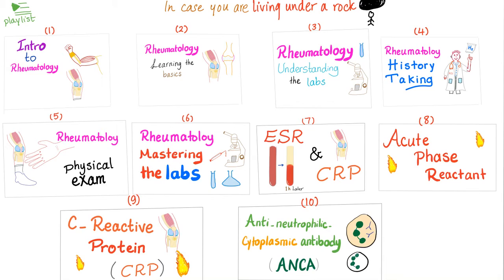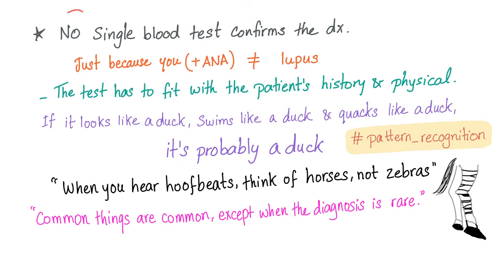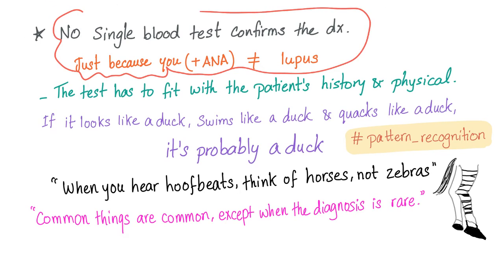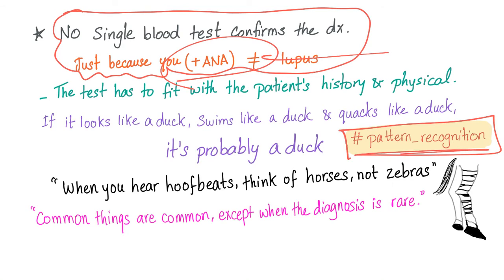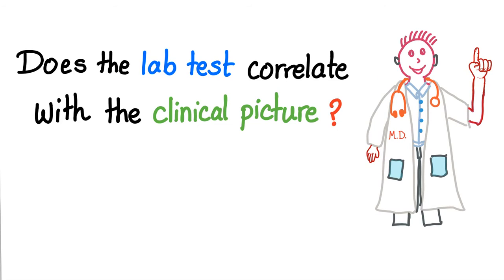I have all of these videos in my rheumatology playlist, so you need to subscribe and save this playlist. One of the most important rules in rheumatology is that no single blood test whatsoever can confirm the diagnosis. Just because you have a positive result doesn't mean you have a specific disease. Rheumatology is all about pattern recognition — the lab results have to fit with the history and the physical exam. A good physician always asks: does the lab test correlate with the clinical picture?